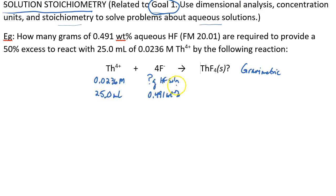So again, we're looking for grams of HF solution. I don't know where you want to begin, but any time I see molarity and volume, I want to get to moles. So I'm thinking if we find the moles of thorium-4 we have, we can at the very least find the moles of fluoride needed and then go from there.